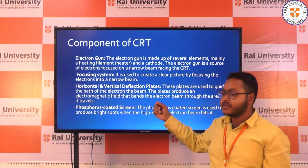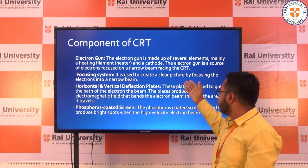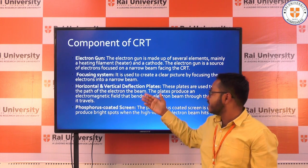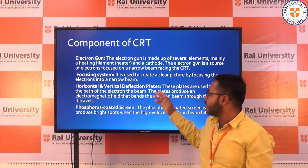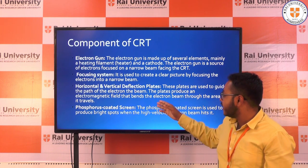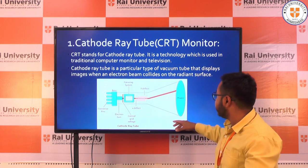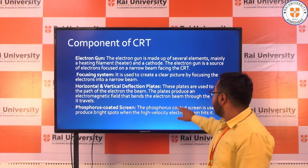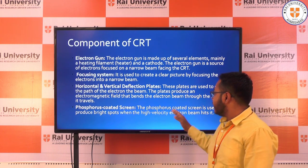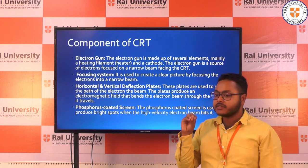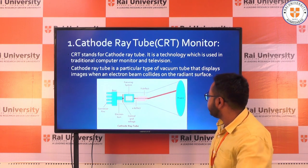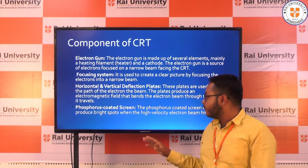Here are the components of CRT. The electron gun is made of several elements — mainly a heating element and cathode — and it is the source of electrons. The focusing system is used to create clear images by focusing the electrons into a narrow beam. The horizontal and vertical deflection plates are used to guide the path of the electron beam. They produce an electromagnetic field that bends the electron beam. The phosphorous coated screen produces a bright spot when the high velocity beam hits it.